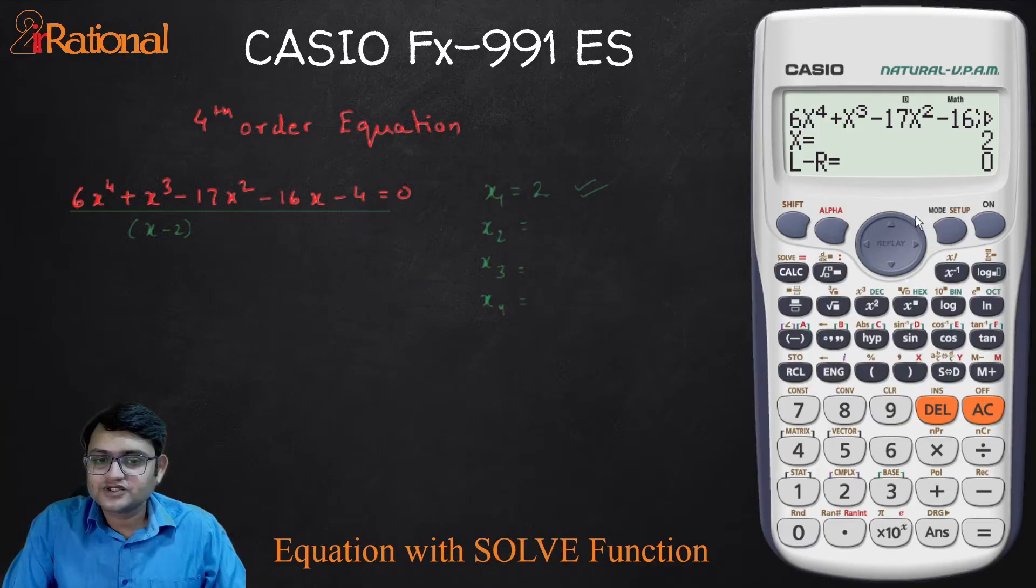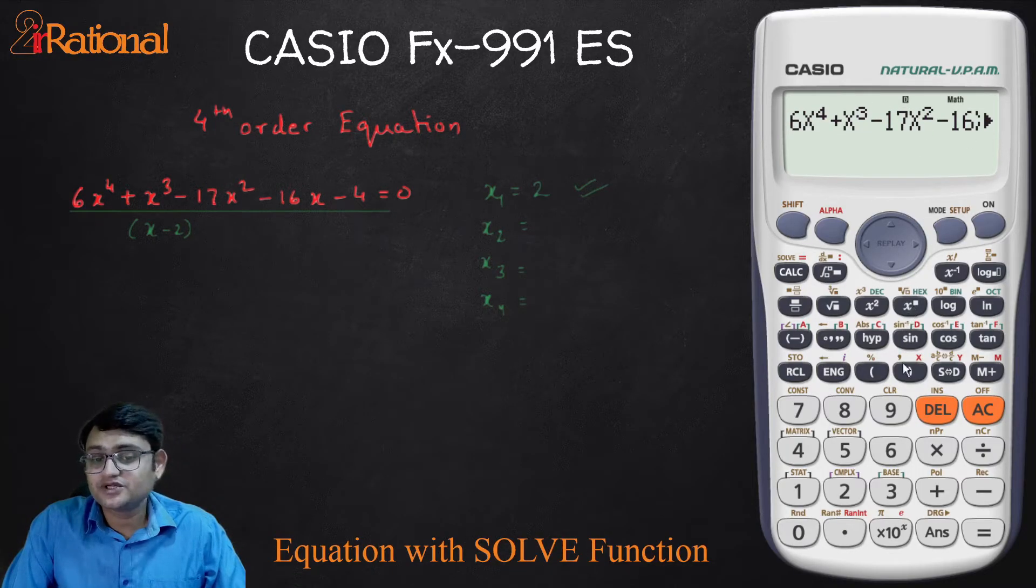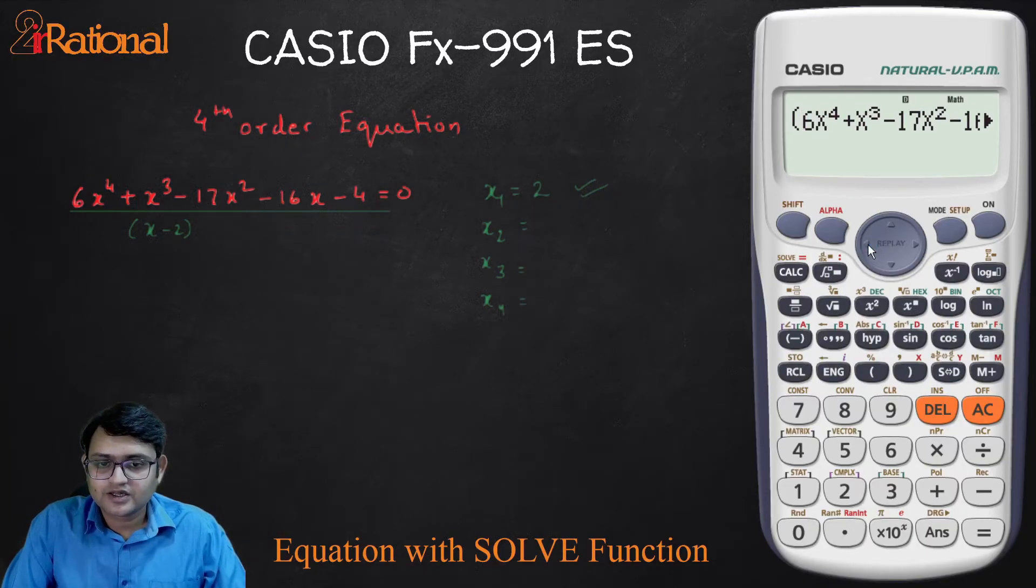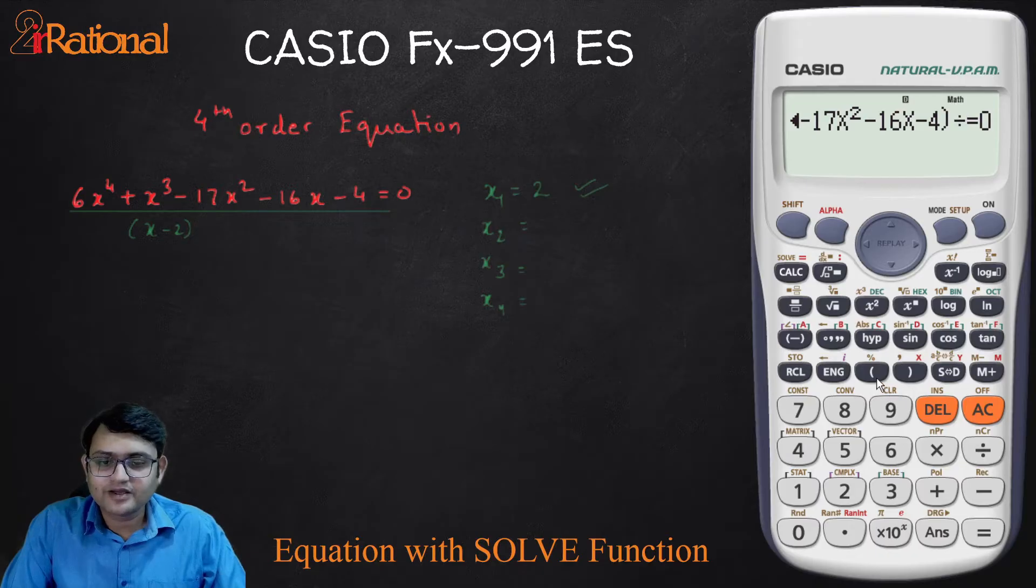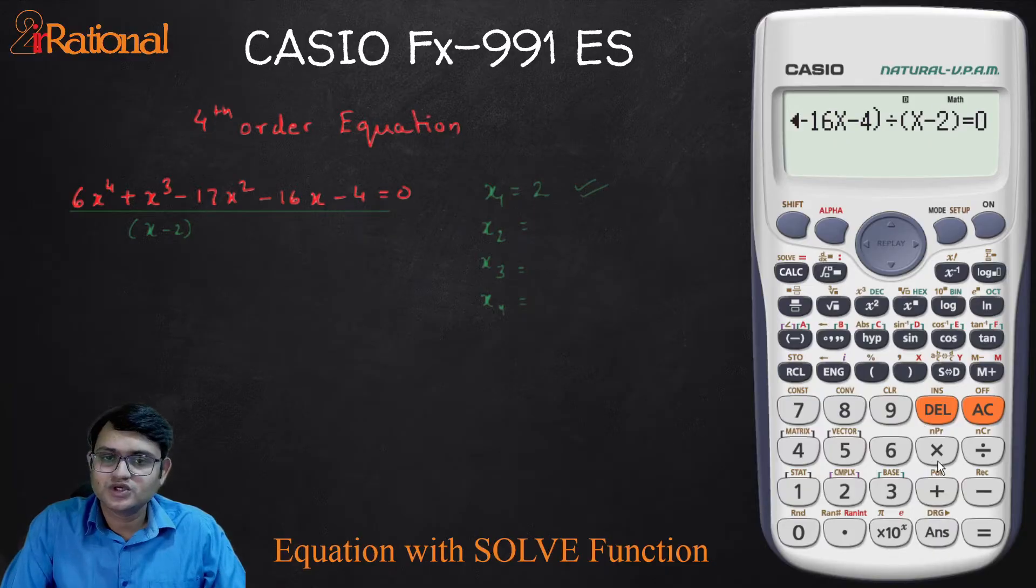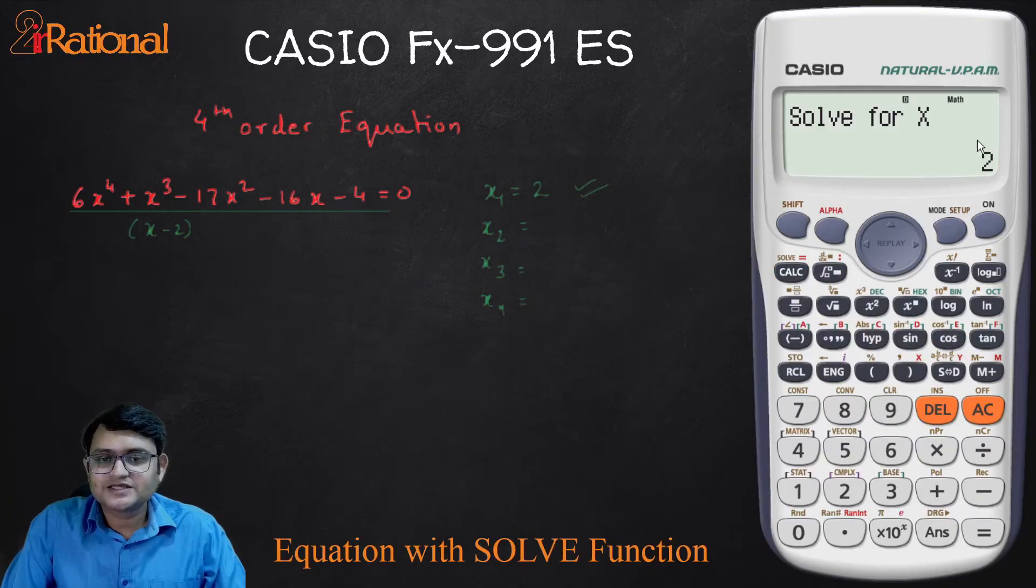So to do that, I will just press the side arrow key. And first I will put this equation in bracket before equal to. So I will put a bracket here. I will go this side. And just before the equal to, I will put a bracket. And then divide by bracket X minus 2. And now, again, I need shift and solve. Again, it is asking for an approximate answer. You don't need to actually give. We will just press equal to.